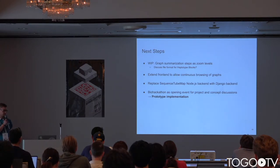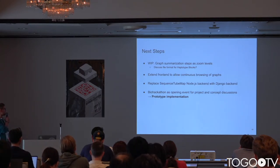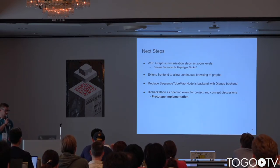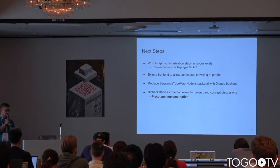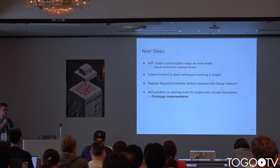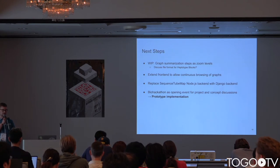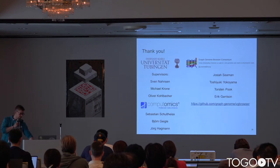Here are our next steps for the project. The current development focuses on graph summarization steps and a file map for haplotype blocks. We also need to extend the current front-end to allow continuous browsing of graphs and replace the sequence tube map Node.js back-end with our Django back-end. For this biohackathon, we want to use it as an opening event to discuss concepts and hopefully come up with a prototype implementation. Thank you very much.